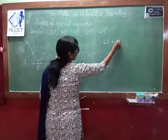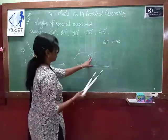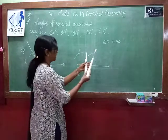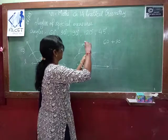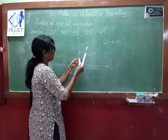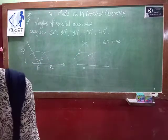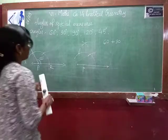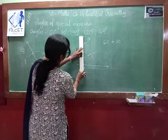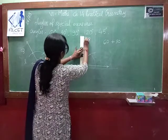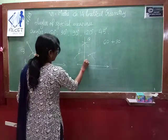60 plus 30 gives you 90 degrees. So we bisect the second 60 degree arc. Keep your pointer, draw arcs to bisect — without changing the compass span. You get one intersecting point — name it Q. Now join P and Q. This is your 90 degree angle.